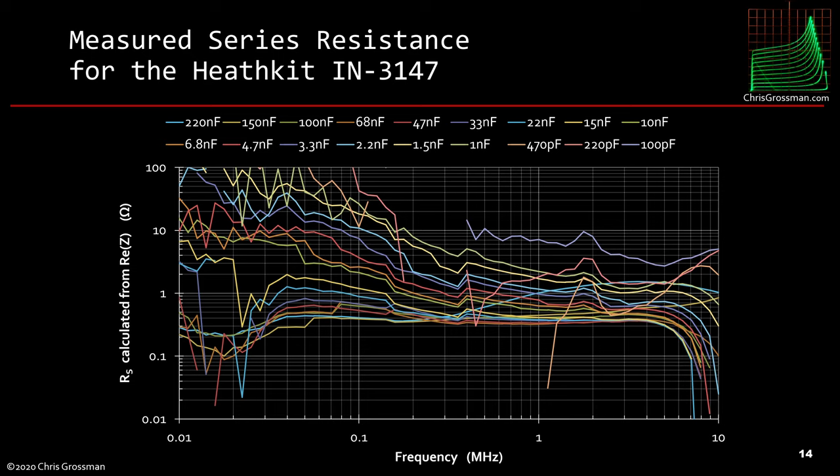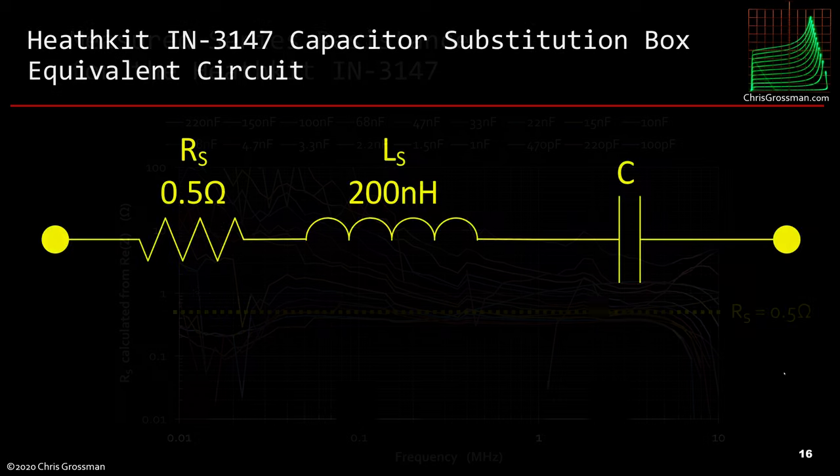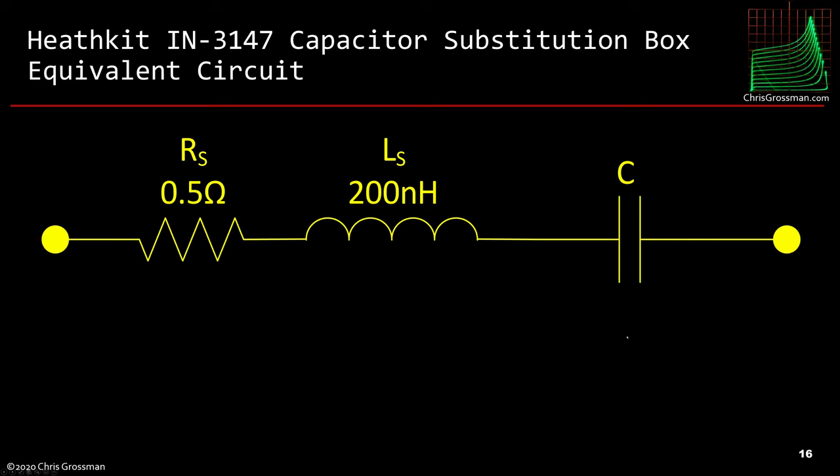Now if we look at the series resistance we measured, we can see here that they bunch up down here at a few ohms. The smaller values are a little noisy, which is somewhat to be expected, but I'm just going to eyeball this and say about half an ohm is probably a good number for everything. So if I were to use this in a simulation, this is the circuit model I would use for the box: half an ohm of series resistance, 200 nanohenries of series inductance, and whatever capacitance value I had it switched to.